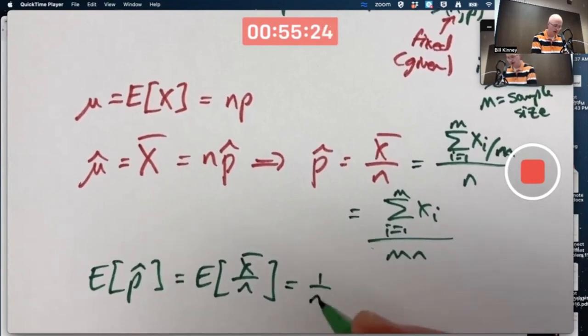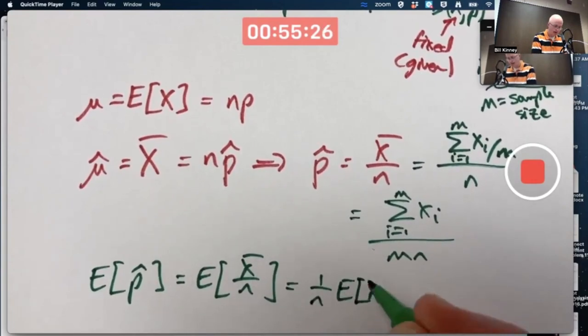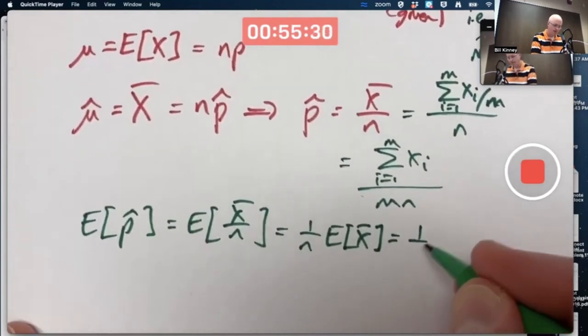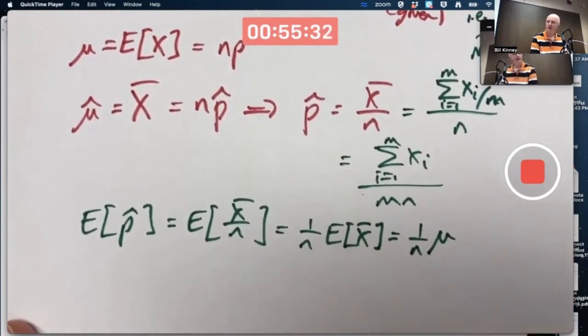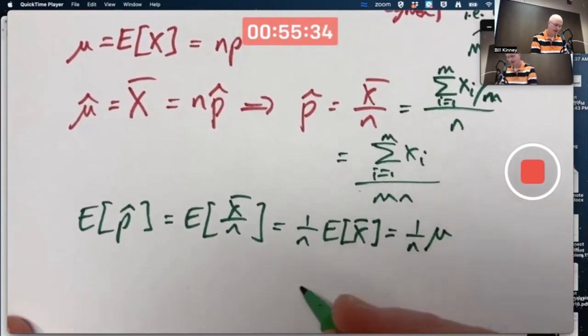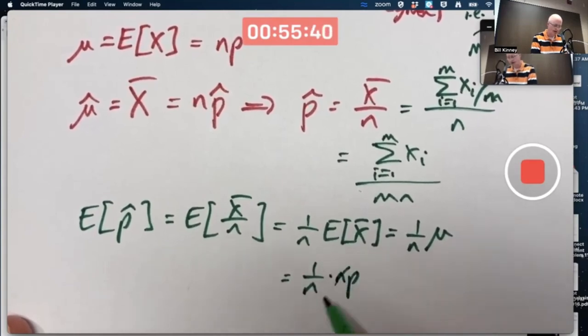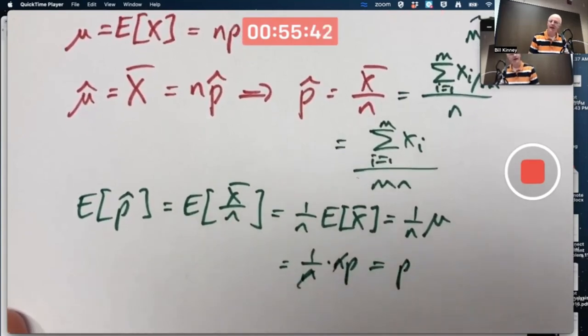I can pull out the 1 over N. And I know the expected value of x̄ is the mean of the population because x̄ is unbiased. And I know the mean of the population for a binomial random variable is N times P. The N cancels. And you're left with a P.